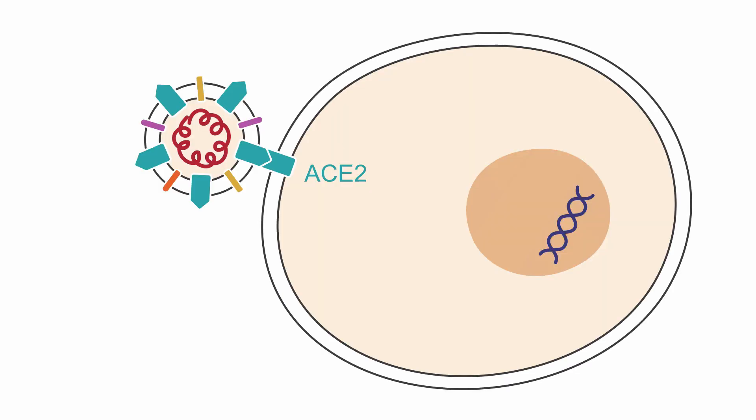Of course, there are many other possible targets for therapeutics. Blocking the interaction between the spike proteins and the ACE2 receptor wouldn't kill the virus, but it would prevent it from infecting a cell. And without a host, the virus couldn't replicate, which would severely limit its ability to infect.